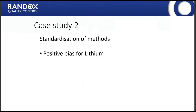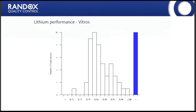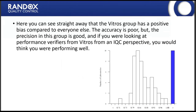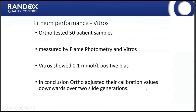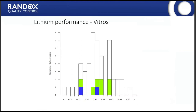The second case study relates to the standardisation of methods and a positive bias for lithium. The VITROS instruments appear at the top of the histogram in a group all of their own, not comparing to results returned by other analysers. From the lab's perspective, their IQC is probably fine — everyone compares well to their instrument group — but the instrument itself has a bias compared to everyone else. We contacted ORTHO VITROS, who tested 50 patient samples measured by both flame photometry — the gold standard — and on their VITROS analysers. The VITROS showed a 0.1 mmol/L positive bias, and ORTHO adjusted the calibration values, bringing their values in line with all other analysers.